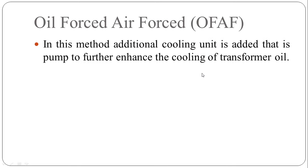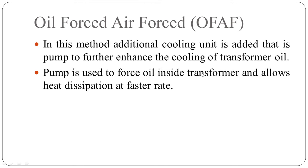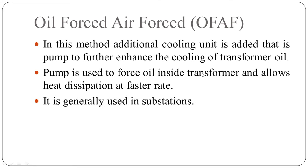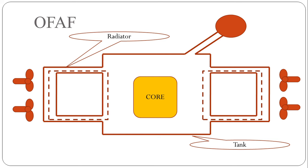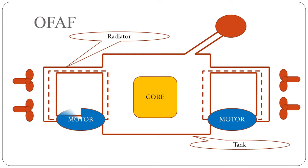The third method is oil forced air forced (OFAF) cooling. In this method, an additional cooling unit — a pump — is added to further enhance cooling. The pump forces oil inside the transformer, allowing heat dissipation at a faster rate. It is generally used in substations. Here you can see: starting from ONAN, adding fans gives ONAF, and adding motors for circulation of oil gives oil forced air forced cooling. The motors force the oil and fans force the air — that is why it is called the OFAF scheme.